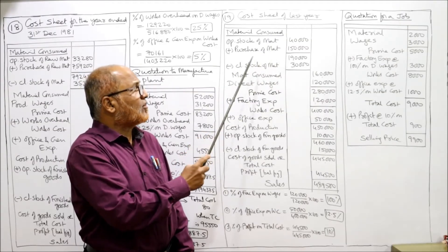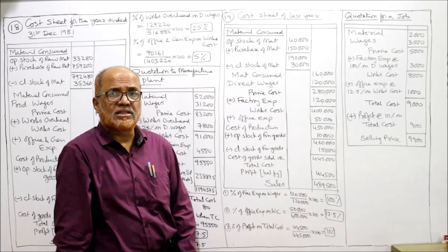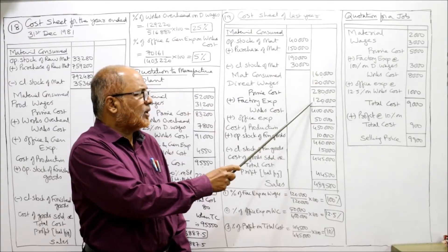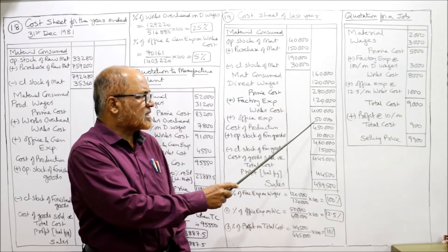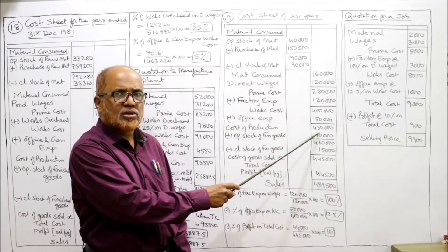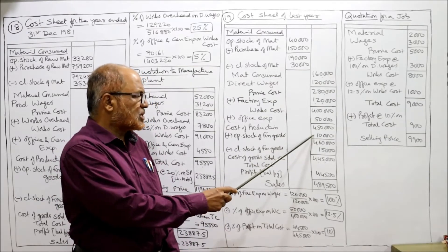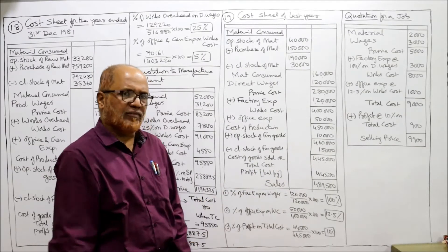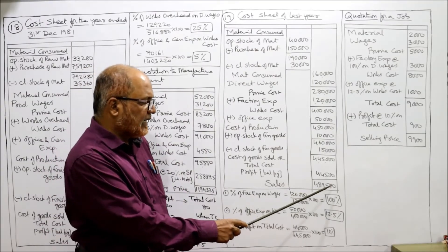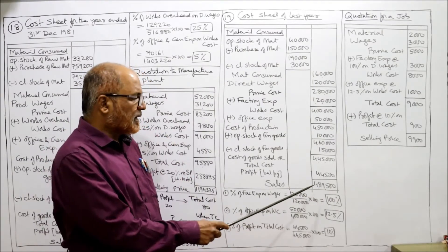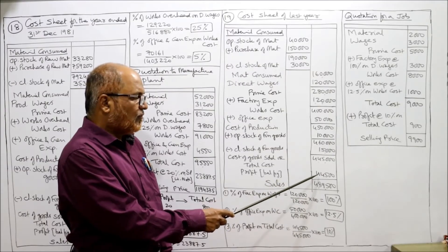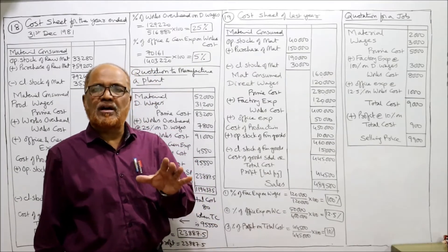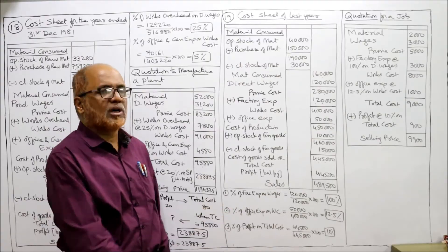Cost sheet for the last year: opening stock of raw material plus purchase of raw material less closing stock of raw material — material consumed 1,60,000. Direct wages 1,20,000, prime cost 2,80,000. Factory expenses 1,20,000, works cost 4,00,000. Office expense 50,000, cost of production 4,50,000. Add opening stock of finished goods 10,000, less closing stock of finished goods 15,000, so cost of goods sold or total cost 4,45,000. Sales 4,89,500, profit (balancing figure) 44,500.